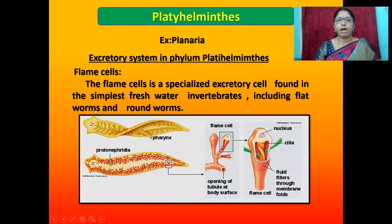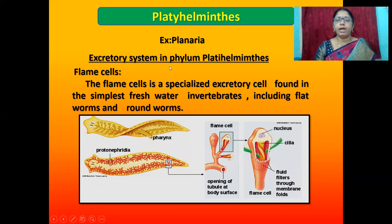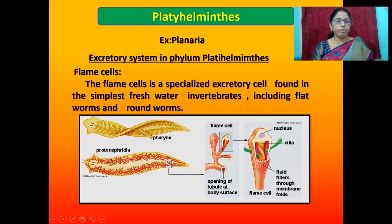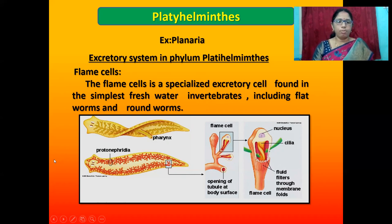The next phylum is Platyhelminthes. The example organism is planaria. The excretory system in phylum Platyhelminthes uses flame cells. Flame cells are specialized excretory cells found in the simplest freshwater invertebrates, including flatworms and roundworms. The tubular structure is called protonephridia. Waste is collected by the flame cell, pushed into the tube cell, and expelled from the body.